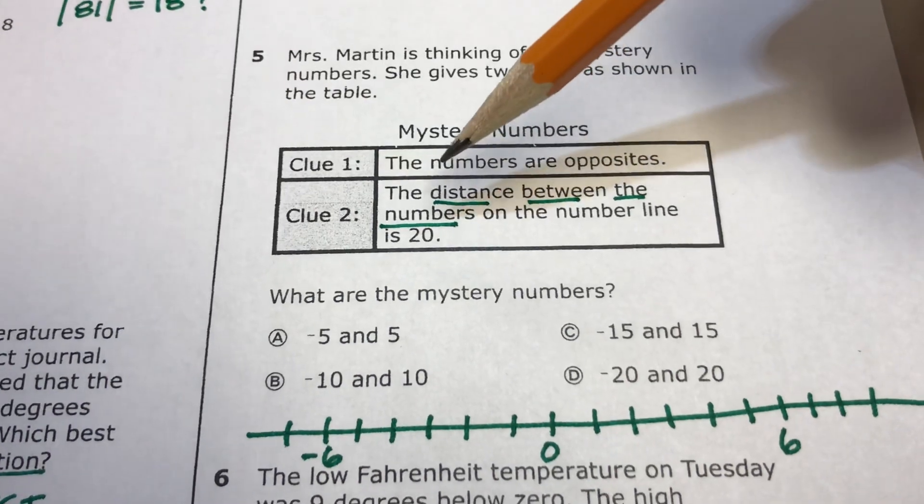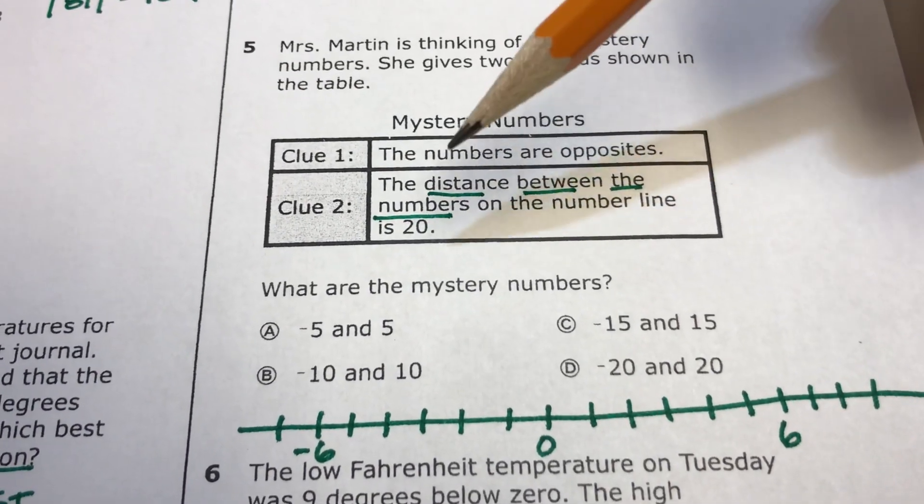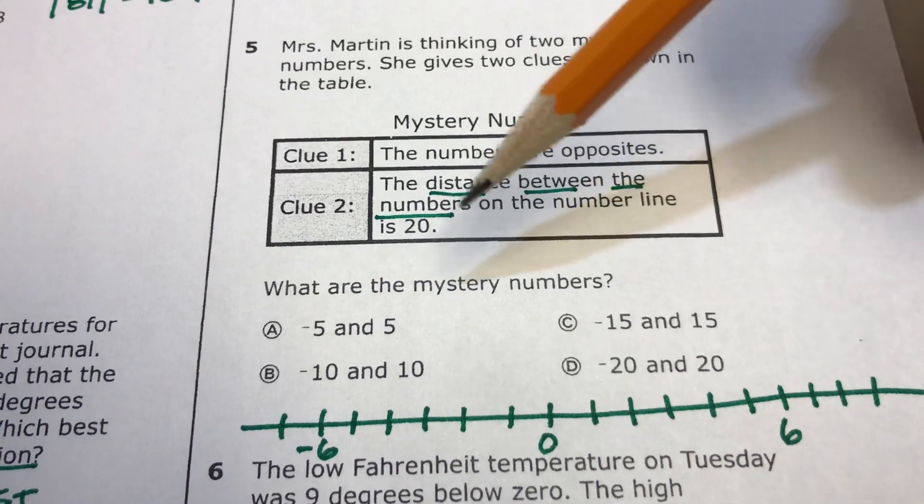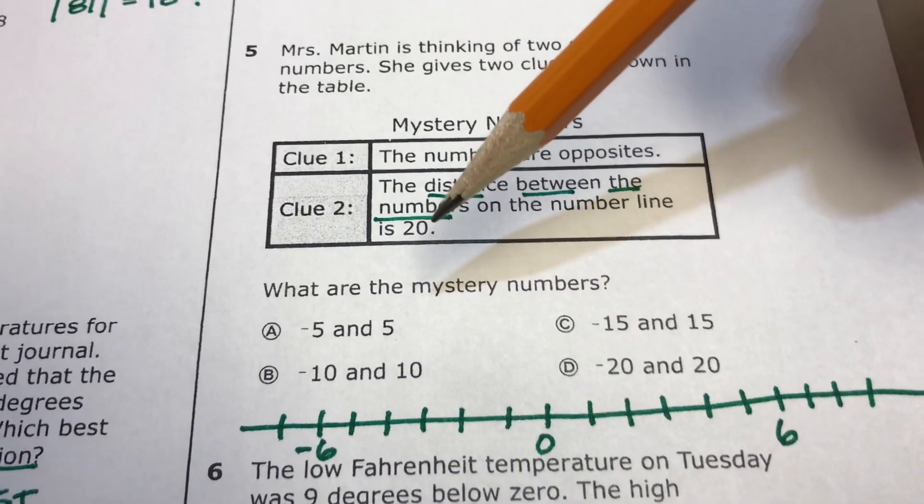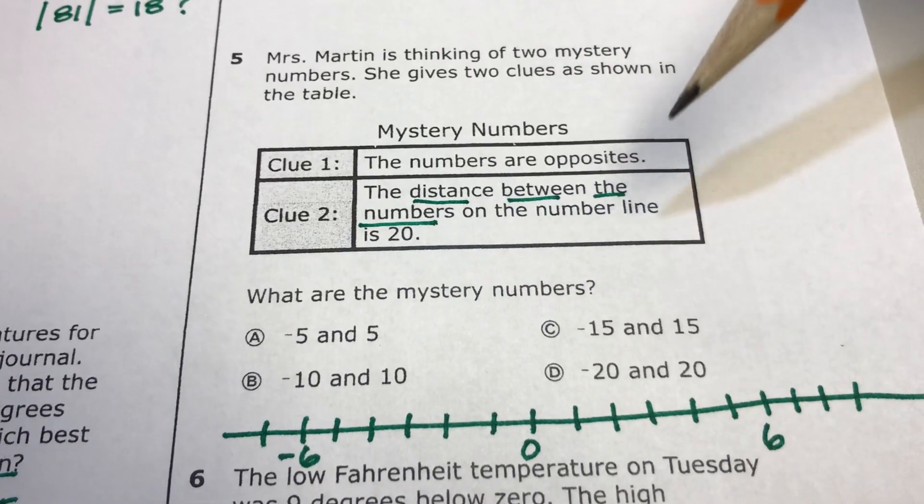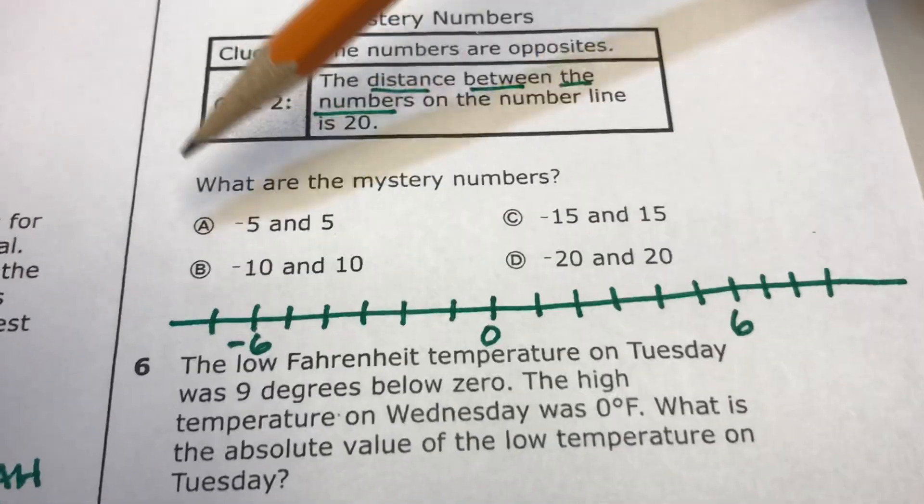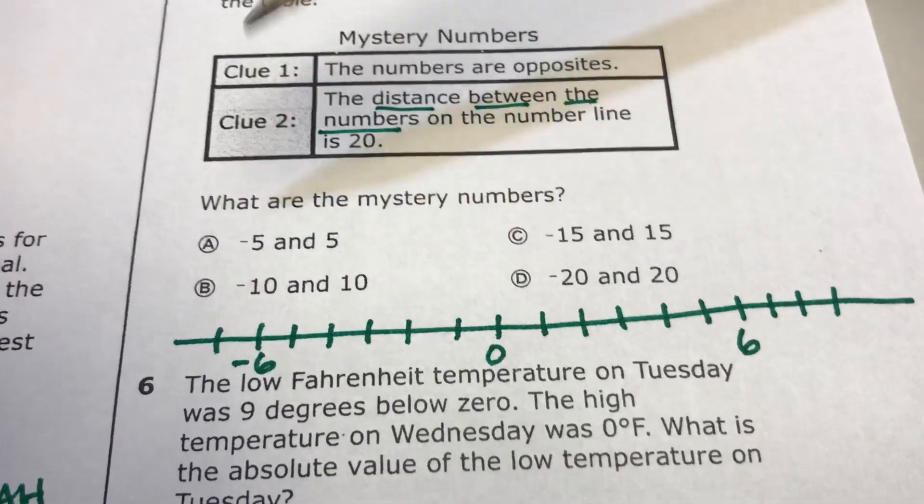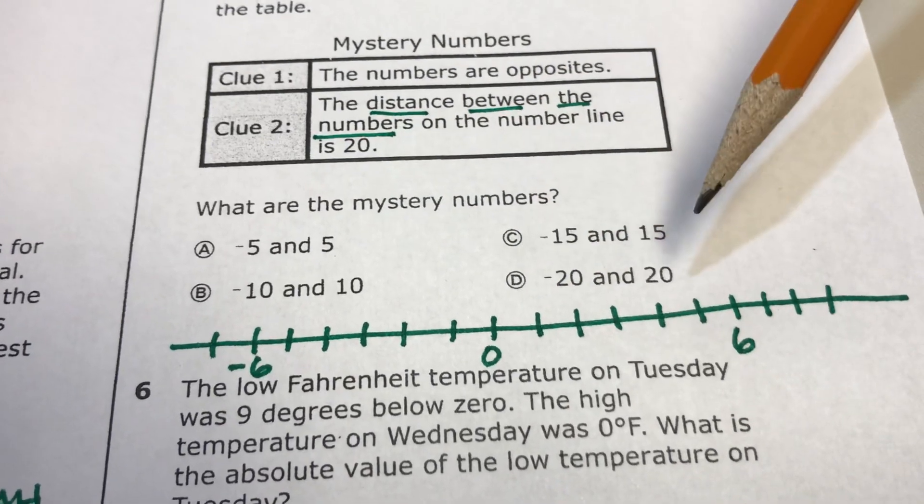The second clue is a little more difficult. It says the distance between the numbers on the number line is 20. It's not talking about the distance between the number and zero. It's talking about the distance between those numbers. The distance between negative five and five, the distance between negative 15 and 15, and so on.